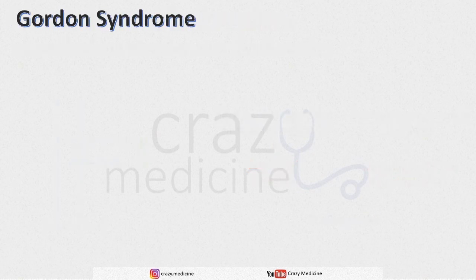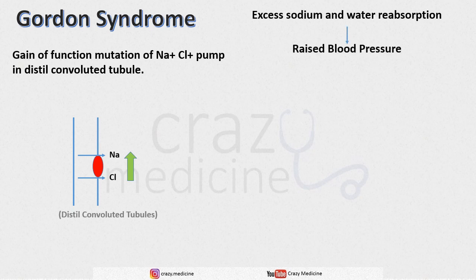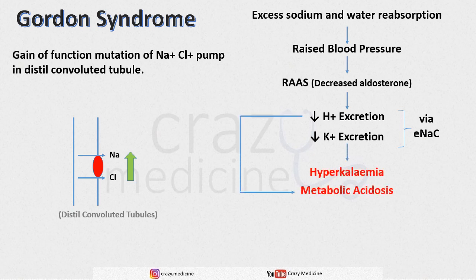Last is Gordon syndrome. Here there is a gain-of-function mutation of the sodium-chloride pump in the distal convoluted tubule, whereas in Gitelman syndrome there was a loss-of-function mutation. So most features will be opposite to Gitelman syndrome: there will be excess sodium and water reabsorption causing raised blood pressure. This will cause negative feedback to the renin-angiotensin-aldosterone system, decreasing aldosterone, which in turn will decrease hydrogen excretion and decrease potassium excretion via its action on the ENaC channel in the collecting duct — causing metabolic acidosis and hyperkalemia. Treatment is use of thiazide diuretics, which inhibit the sodium-chloride channel in the distal convoluted tubule.